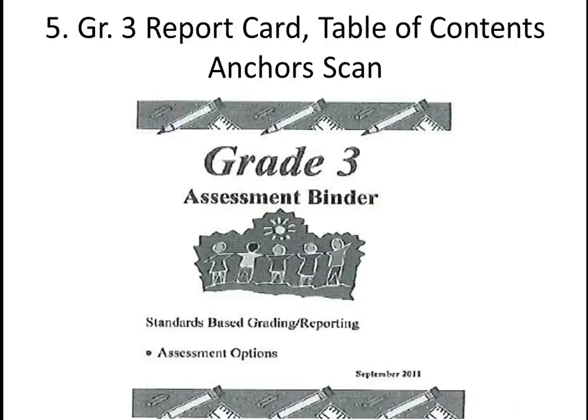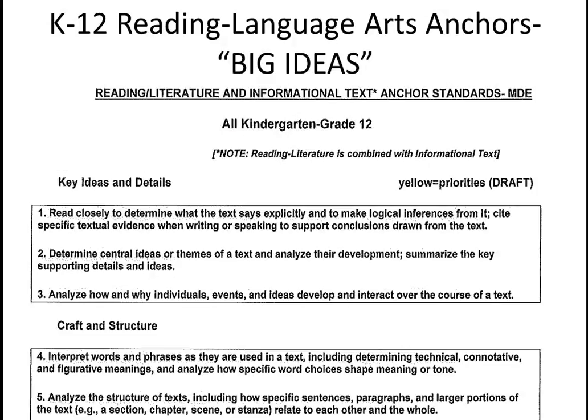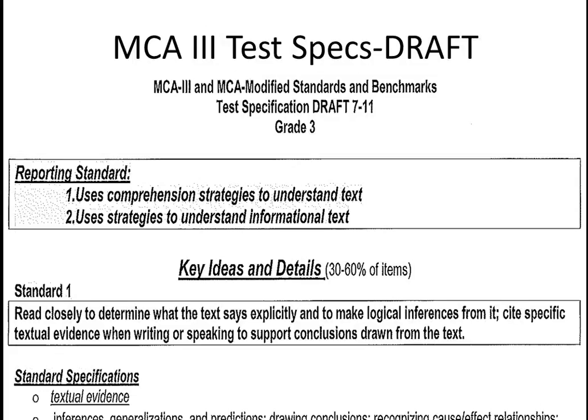The second folder includes a scan of important information shared with you last September 1st. Included in this packet is a table of contents to help you find the assessments that writing teams began last summer. Next, you have a copy of the Anchor Standards — the big ideas that run through kindergarten through grade 12 and the organizing threads throughout each grade level. The next section has the MCA-3 draft test specs for your grade level, which offers important information on which standards will be tested.